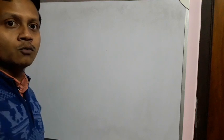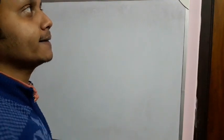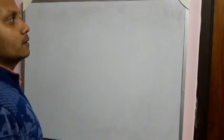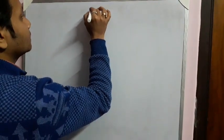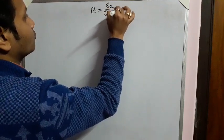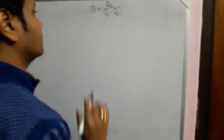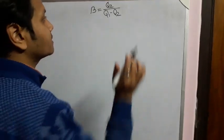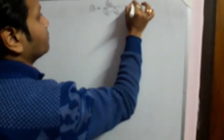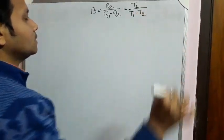Welcome to my YouTube channel ShomoPhysics. In yesterday's lecture I discussed the refrigerator and calculated the efficiency of a refrigerator: beta equals Q2 upon Q1 minus Q2, where Q2 is the heat taken from the sink and Q1 is the heat rejected to the source when external energy is supplied from outside. That expression can also be written in terms of temperature as T2 upon T1 minus T2.